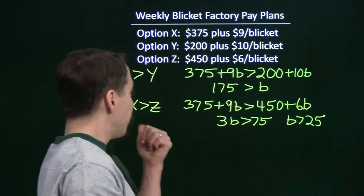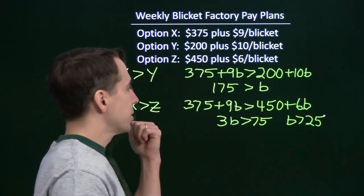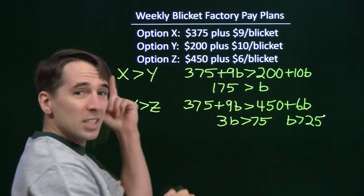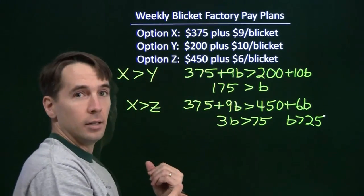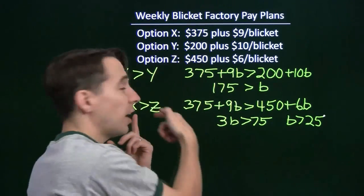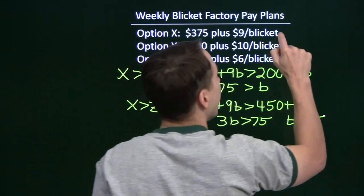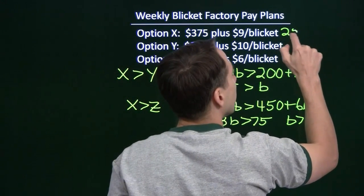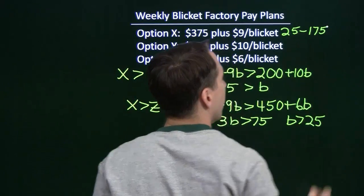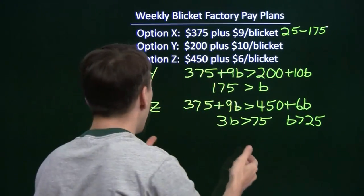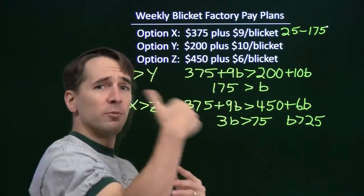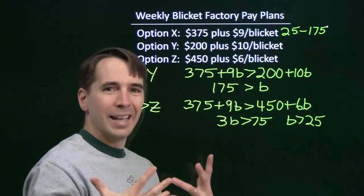So if B is greater than 25, then I should choose option X. I see that when B is between 25 and 175, X is better than both Y and Z — if it's less than 175, it's better than Y; if it's greater than 25, it's also better than Z. So option X is the winner from 25 through 175. At 175, it doesn't matter whether I choose X or Y; at 25, it doesn't matter whether I choose X or Z. So from 25 through 175, I can just pick X and that will be the best for me.